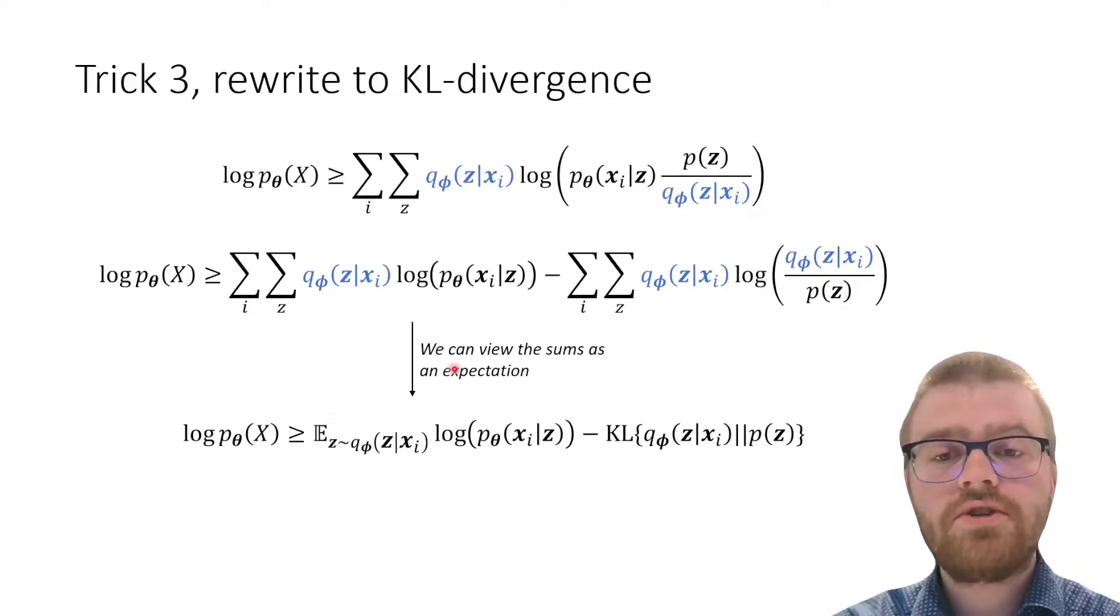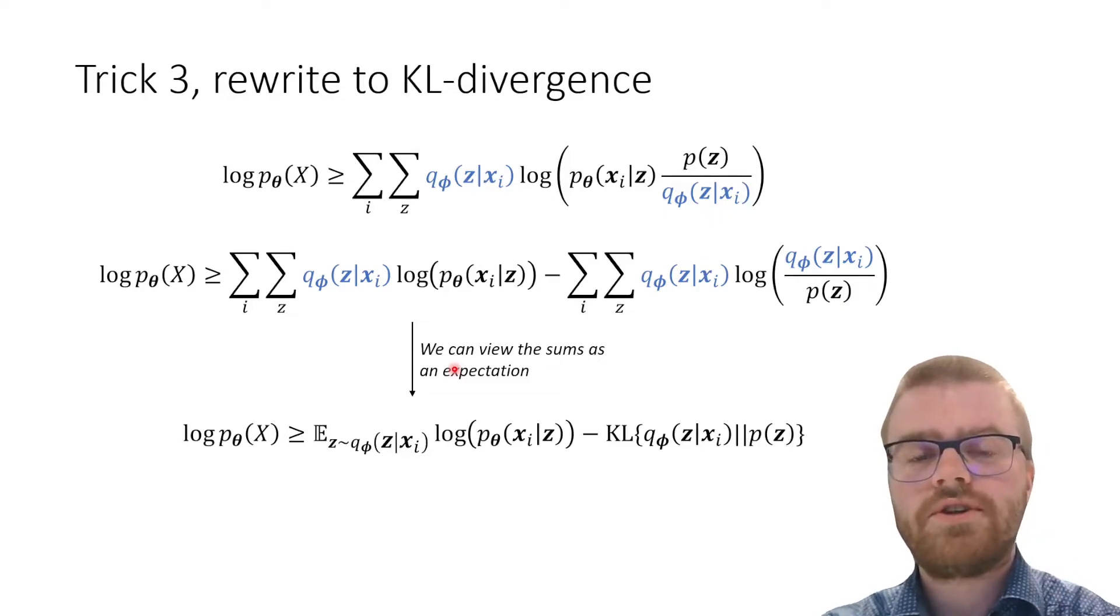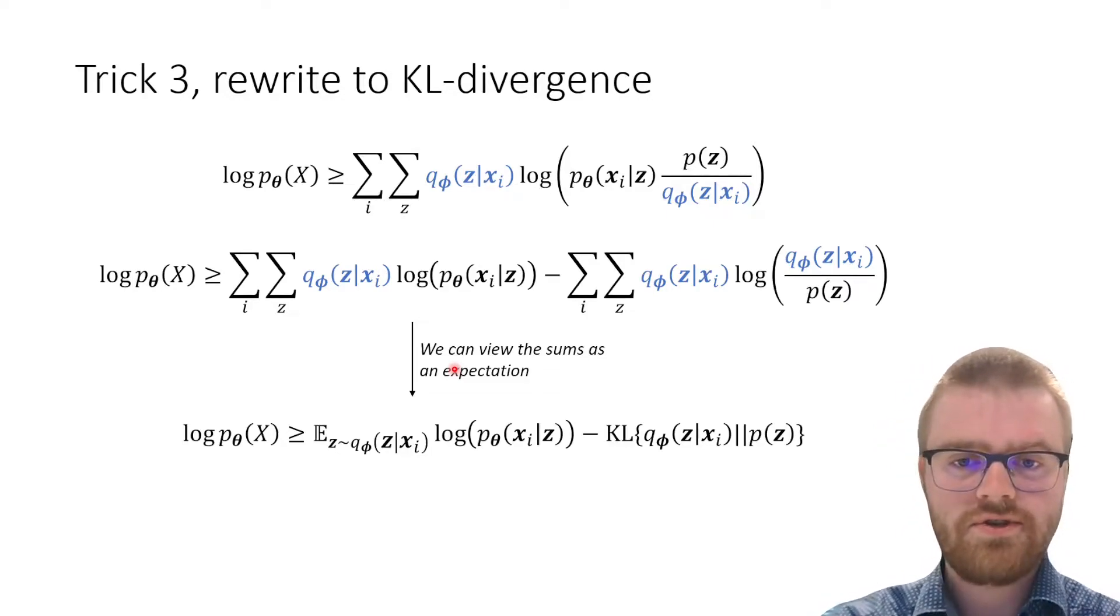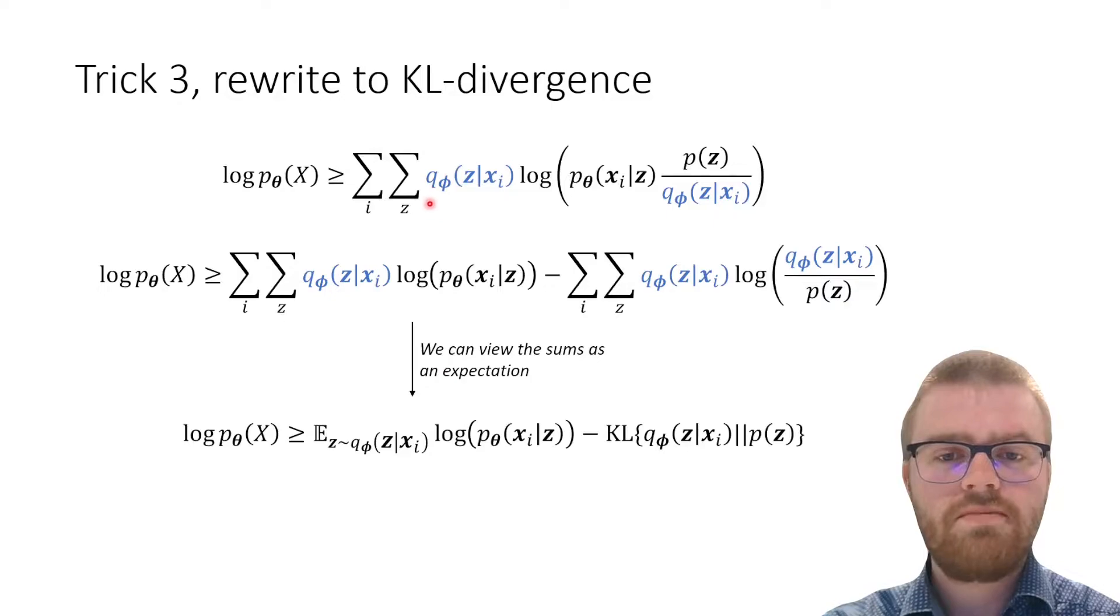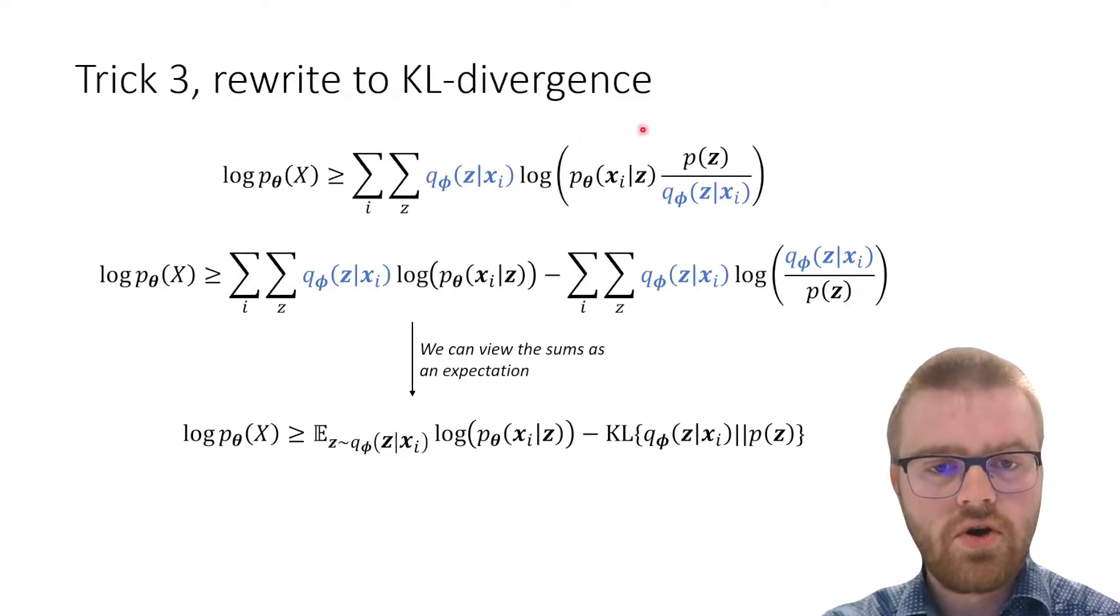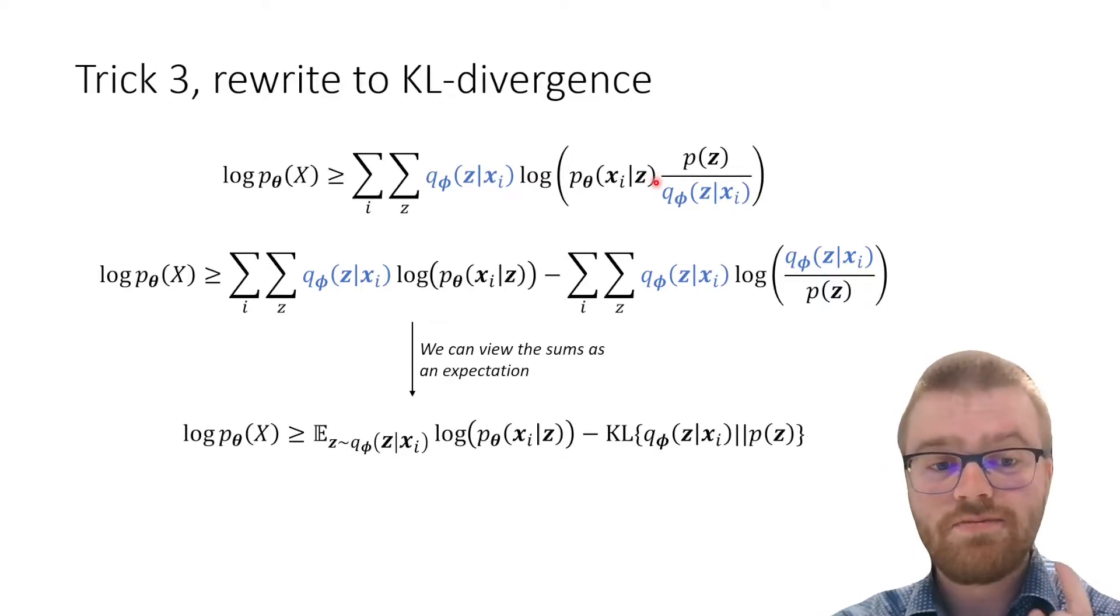The last trick we are going to introduce is we are going to rewrite into two terms, one of which is going to be the KL divergence. We can observe we have a summation of logarithms. In this logarithm there's a multiplication. This multiplication we can actually split.